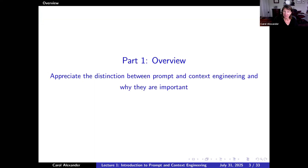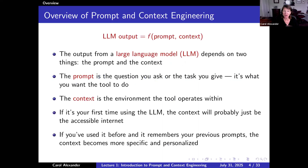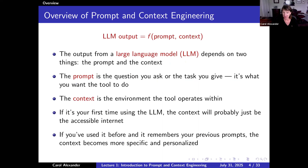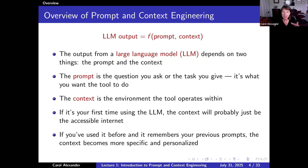This is part one: distinguishing between prompt engineering and context engineering and knowing why they are important. You can think of the output or the response from a large language model as being a function of the prompt — that's what you type in just now — and the environment, the context. The prompt is what you want the model to do, and the context is the environment in which it operates.